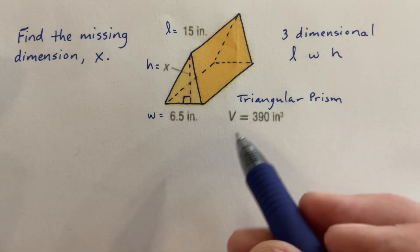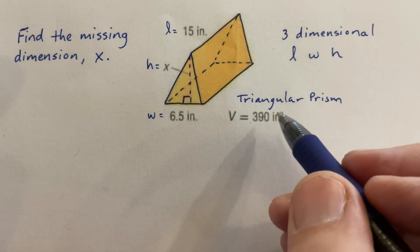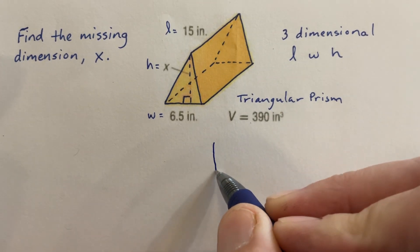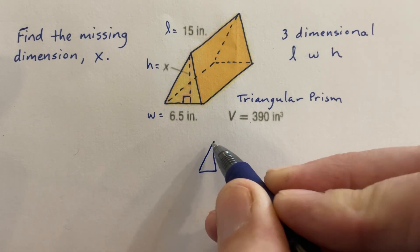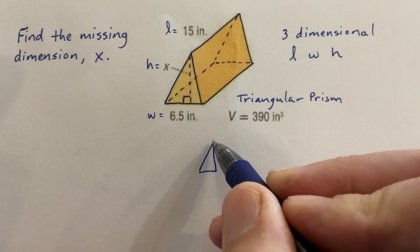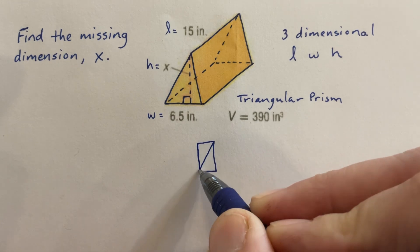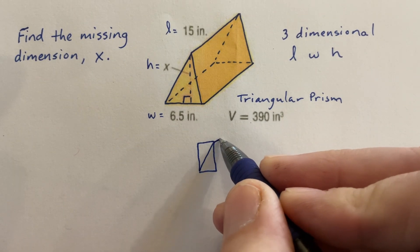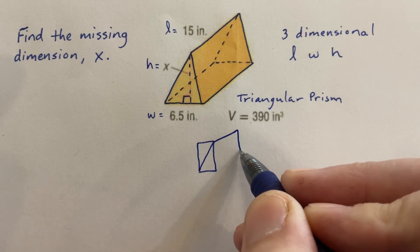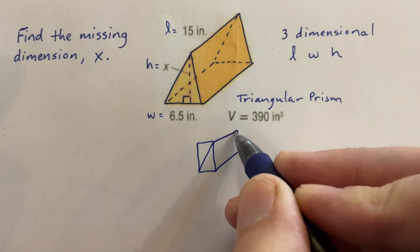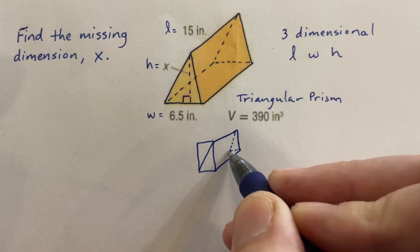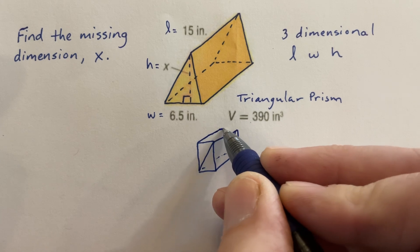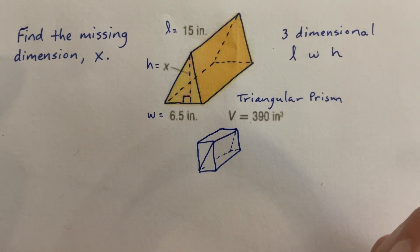The way that I like to think of a triangular prism, or triangles in general, is that triangles are half of rectangles. So if I have a triangle here, it's half of a rectangle. So if we have a triangular prism that we're trying to find the volume of, we're actually going to find the volume of the rectangular prism, the length, width, and the height, and then we're going to divide that by 2.